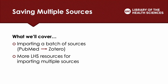Now that we've gone over inputting a singular source, I will now demonstrate how you can input multiple sources at one time into Zotero. Let's say you are researching and you get to a page of results that looks promising for your research, systematic review, or other project. You are able to import a batch of articles to Zotero and I will demonstrate how to do so in PubMed. I will also show you where you can find additional resources on saving multiple sources to Zotero.